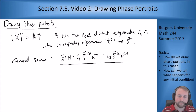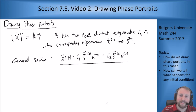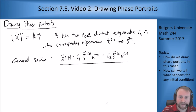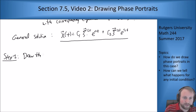The idea behind these phase portraits is that there are two solutions we can draw really easily: the solution where c₂ is 0, and the solution where c₁ is 0. We can draw those two out pretty easily and see what they're going to do. Then we use the picture of what's there to fill in what's happening between them. So step one: draw the straight line solutions.